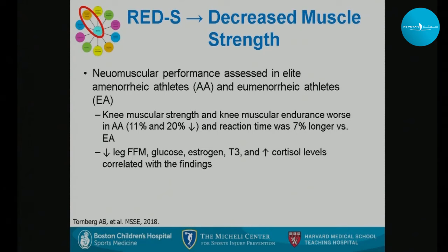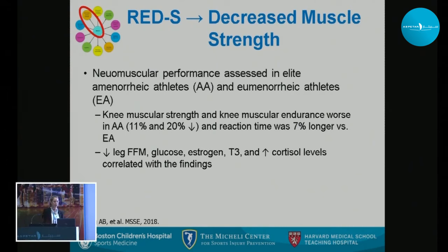Neuromuscular performance was assessed in elite amenorrheic and eumenorrheic athletes. Knee muscular strength, endurance, and reaction time were worse in the amenorrheic athletes — reaction time was 7% longer. They had decreased leg fat-free mass and glucose, lower estrogen, and increased cortisol levels that correlated with these findings.